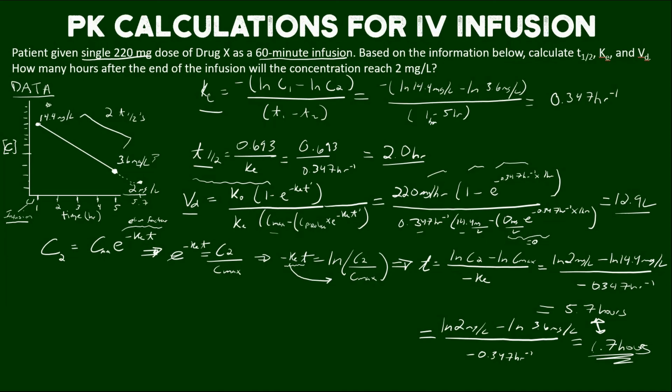I hope this gives a helpful overview of how we use different equations for a patient receiving an IV intermittent infusion to calculate PK constants, and how to manipulate concentration equations to determine how long it takes to reach certain concentrations. Thank you for your attention.